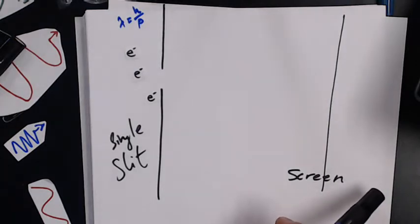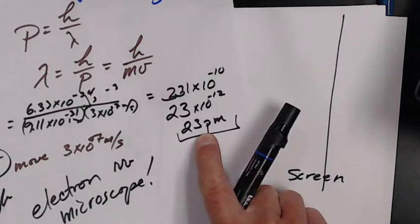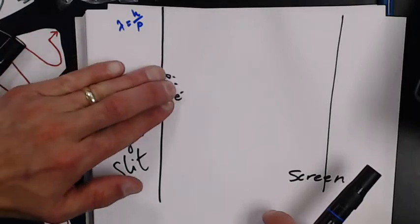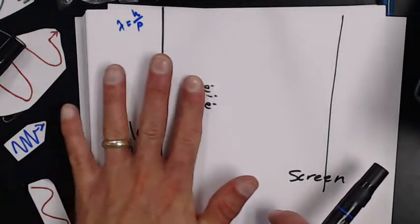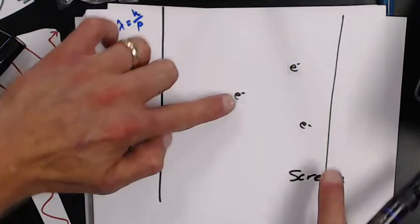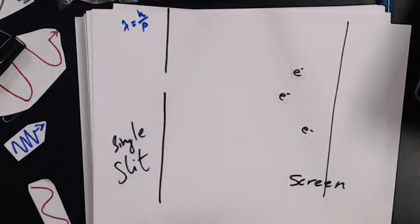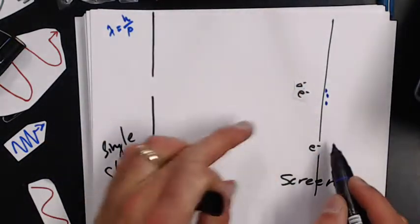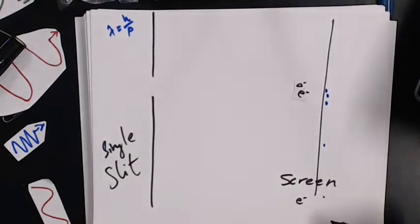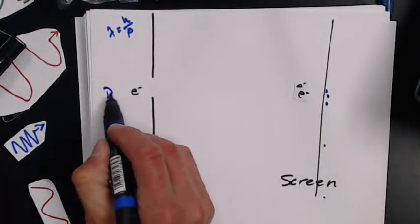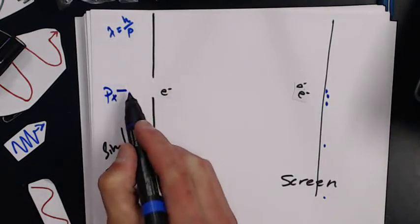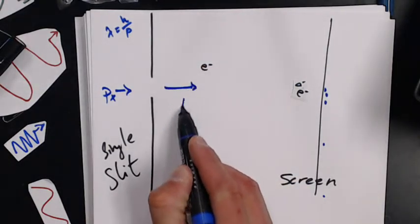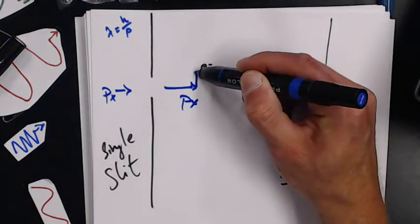As they come in and go through, they don't just all continue on, they're going to start spreading out and hitting in different places. Maybe three hit here, maybe one hits down here, maybe another one hits out here. But they've all been moving in with some momentum in the x-direction, and the moment they go in, they still have momentum in the x-direction and they pick up some momentum in the y-direction.